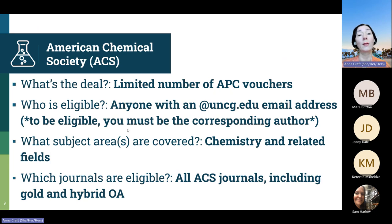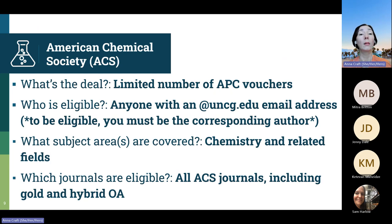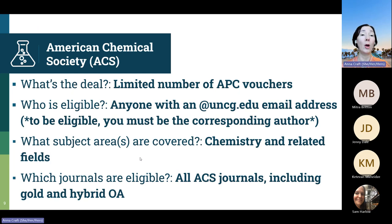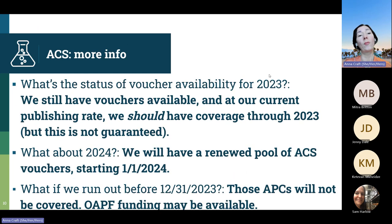Chemistry and related fields are the area they concentrate in, and all of their journals are eligible. This includes gold and hybrid open access journals. Gold open access is when the full journal — everything in it — is published through open access. Hybrid is when it is a mostly closed journal, so it's not open access by default. But you can elect as an author to pay an APC, an article processing charge, in order to make your article open. So with hybrid, some of the content is open by author choice; with gold, everything is open.